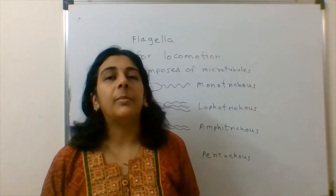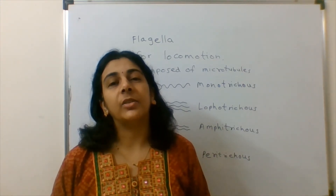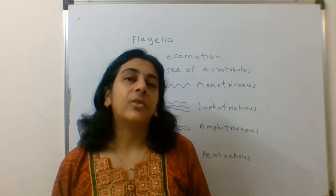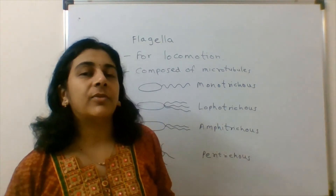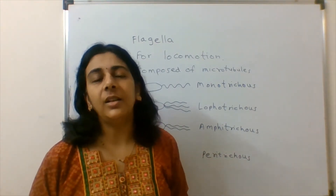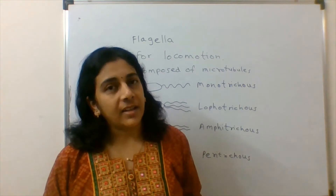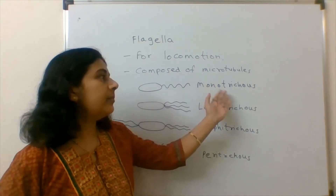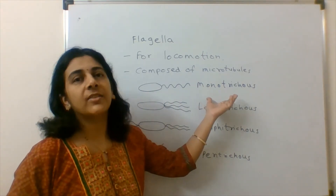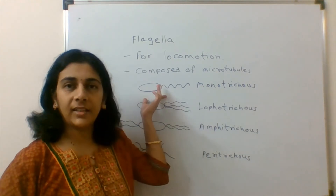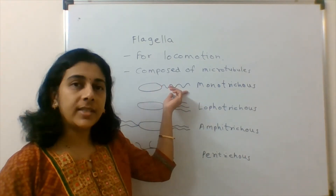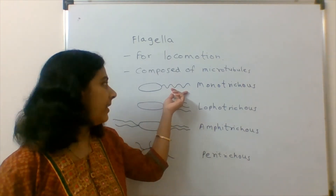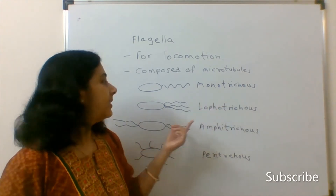According to the number and position of flagella present on the bacterial cell, it can be classified into four types. So which are the four types? That is what is asked in the question. If we say monotrichous flagella, in case of monotrichous flagella, one single flagella is there at one side of the bacterial cell — at the single pole. That is the monotrichous flagella.